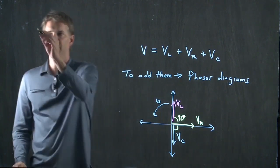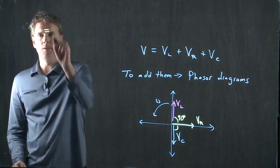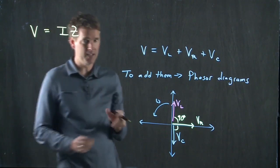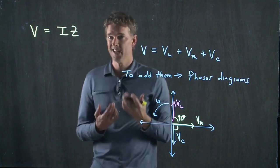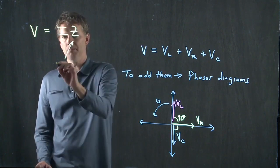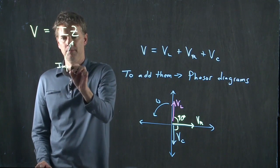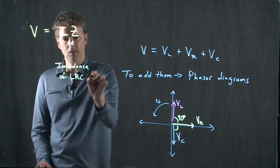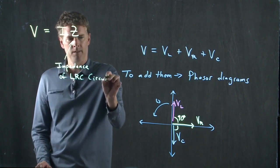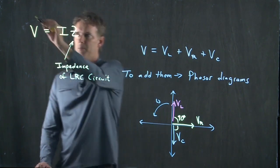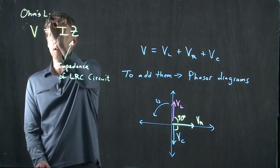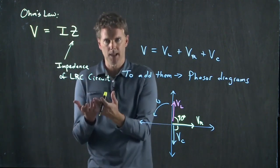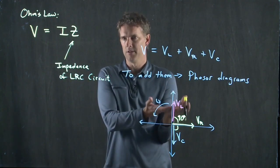In an LRC circuit we have V is equal to I times Z. We've introduced a new quantity called the impedance of the LRC circuit. This is nothing more than Ohm's Law again, but now we have this complex relationship between the different devices.